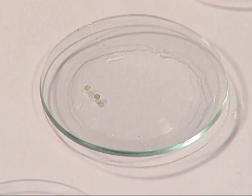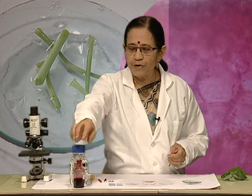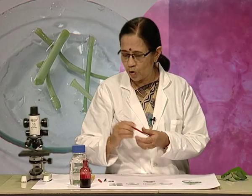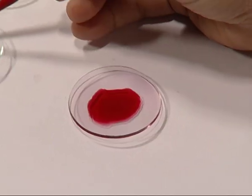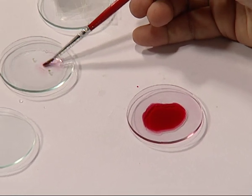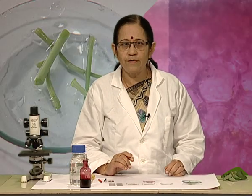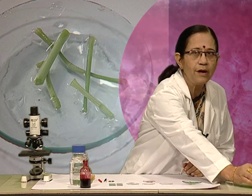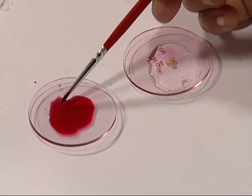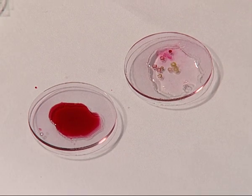Now we want to stain these sections. For this, we will take safranine stain and dilute it with some water and put these sections in it. Keep them for 1 or 2 minutes and then take them out into a watch glass having water. These sections are then transferred to a watch glass containing water.